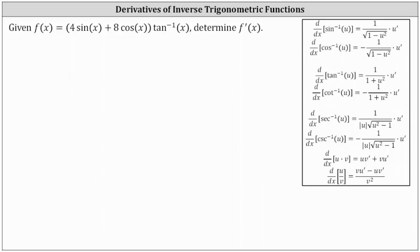We're given f of x equals the quantity four sine x plus eight cosine x times inverse tangent x, and asked to determine f prime of x. Notice how because we have a product of functions here, we will have to apply the product rule of differentiation to determine f prime of x.